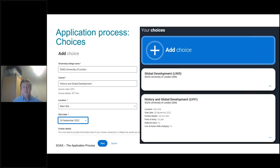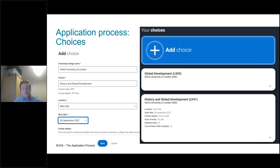After filling in all of that information, you move on to the choices section. Hopefully before you reach this you'll have spent some time researching universities, looking at the subjects available, and thinking about what you might want to study. Once you've got a list ready you can add your choices into your UCAS application using the 'add choice' button. This brings up an auto-populating form where you can select the courses you're interested in and the universities at which you'd like to study. You can submit up to five choices, though you don't have to submit all five.